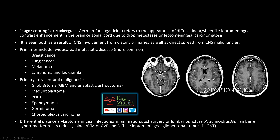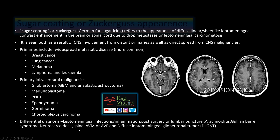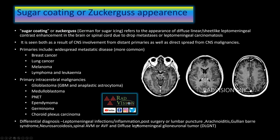We must screen the brain as well. Differential diagnoses for sugar coating or Zuckerguss appearance include leptomeningeal infections or inflammation, post-surgery or lumbar puncture, arachnoiditis, Guillain-Barré syndrome, neurosarcoidosis, spinal AVM or AVF, and the rare diffuse leptomeningeal glioneuronal tumor, which shows leptomeningeal carcinomatosis-like features along with multiple cysts in the brain and spine.